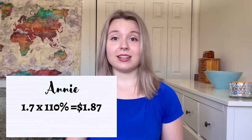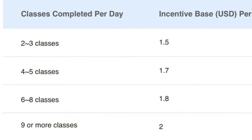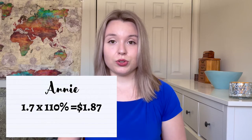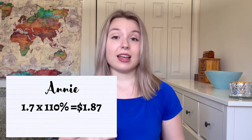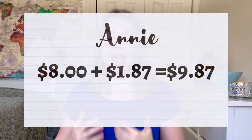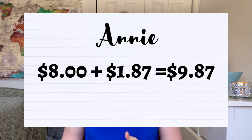Now let's walk through examples to see how this formula is actually used. Teacher Annie taught four classes today, so her incentive base is 1.7. She is at level four, so her incentive percentage is 110%. Multiplying 1.7 by 110% equals a credit score incentive of 1.87. Adding that to her base rate of $8.00 gives her $9.87 per 25-minute class.